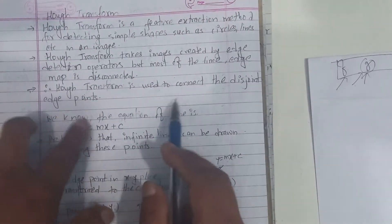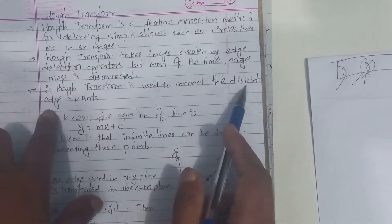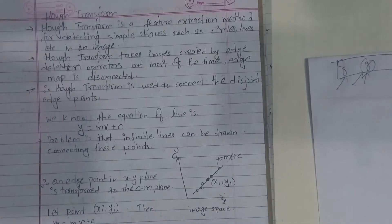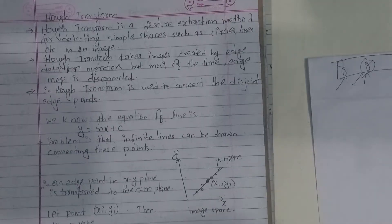Hough Transform is used to connect the disjoint edge points. So when a point is disconnected, the Hough Transform zone is used to reconnect it.